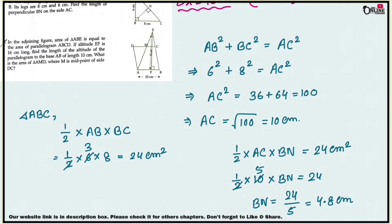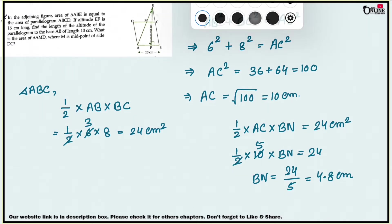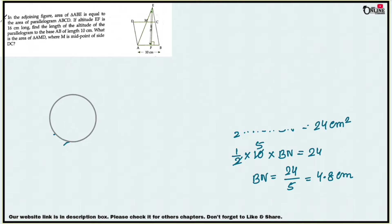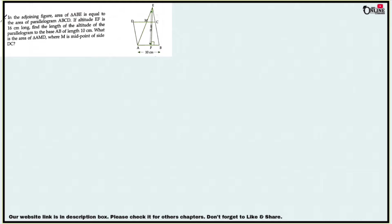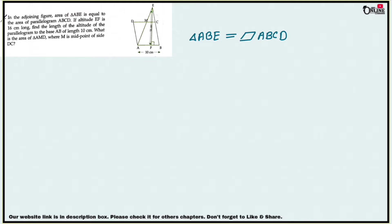Now moving on to sum number 9. In the adjoining figure, the area of triangle ABE is equal to the area of parallelogram ABCD. The altitude EF is 16 centimeters long. Find the length of the altitude of the parallelogram to base AB, where AB equals 10 centimeters.